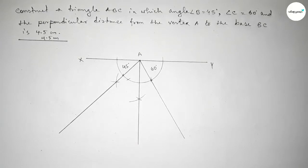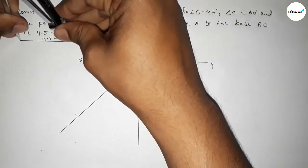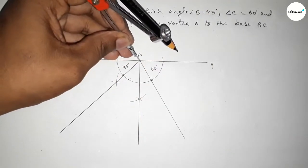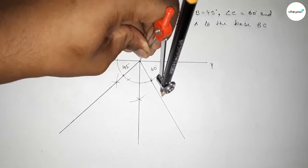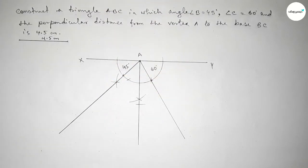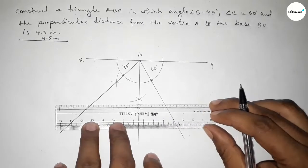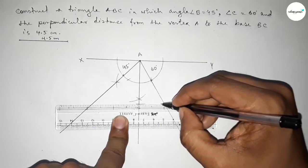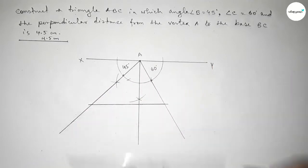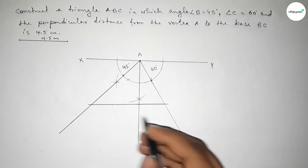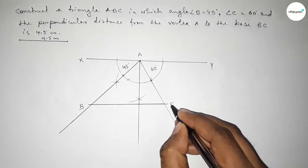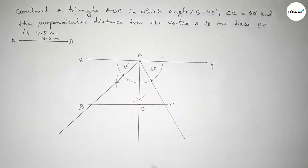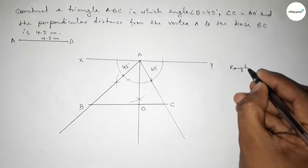Next, taking the length 4.5 centimeters using the compass and putting it on point A, cut the perpendicular line. Then join a line parallel to XY. We label this as point B, point C, and point D, so this line is AD.